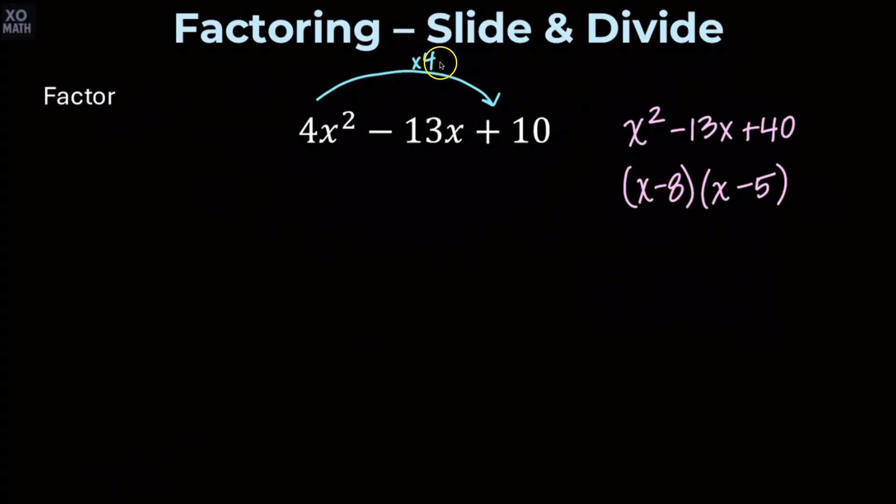Now we're going to do the divide part. We'll divide both of these by 4. One of them does reduce, so we're going to have the quantity x minus 2 reduces to an integer. But the other one, we'll have to slide the 4 over. So we're going to have 4x minus 5 as another factor.